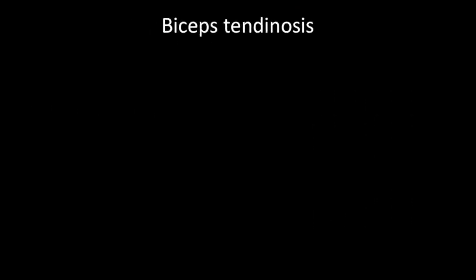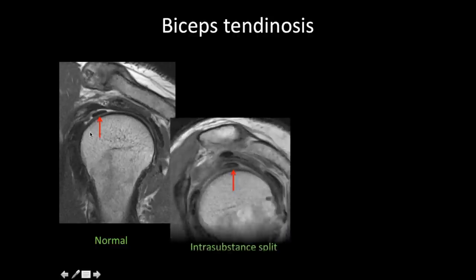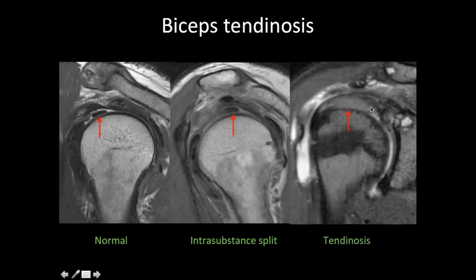Besides the rotator cuff tear, biceps tendinosis can also be a cause of pain. When reporting a rotator cuff tear you must also mention the status of the biceps tendon, because if it is tendinosed the surgeon may prefer a tenotomy or tenodesis. A normal biceps tendon, intrasubstance split, and moderate to severe tendinosis are the appearances to report.